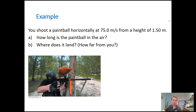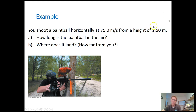Let's do some example problems. Imagine you went paintballing — you have a paintball gun and you're going to shoot it perfectly horizontally. Assume the paintball exits the gun at an initial speed of 75 meters per second. Because you're holding the gun up at about hip level, let's say its height above the ground when it exits is 1.5 meters.